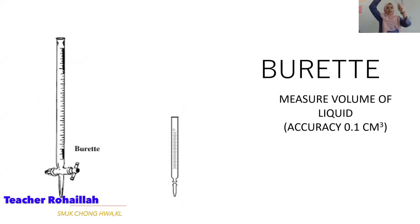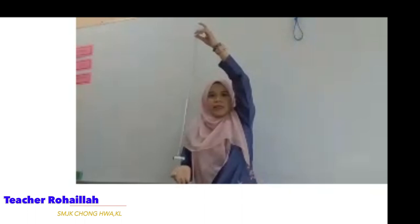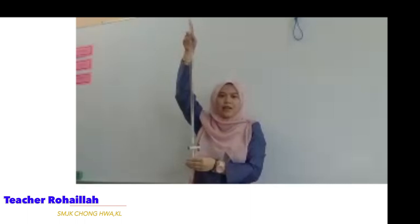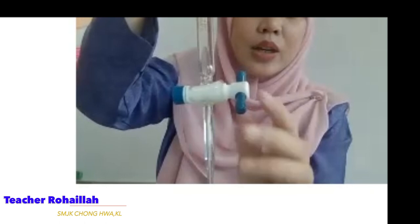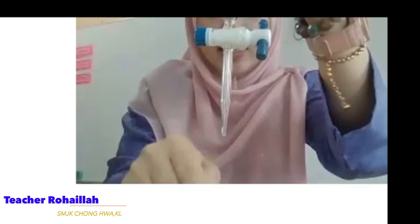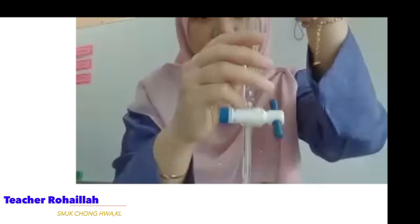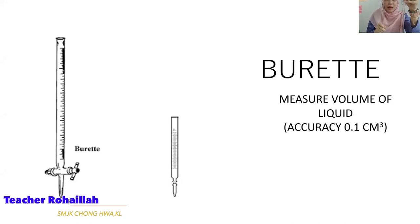Next: the burette. The burette is very long. It has a tap — pipe pad — at the bottom which you control to release liquid outwards. The burette is used to measure and dispense accurate volumes of liquid. Boleh nampak? This is the burette.